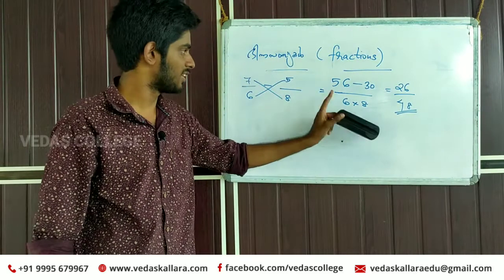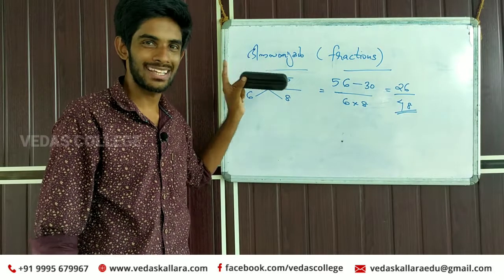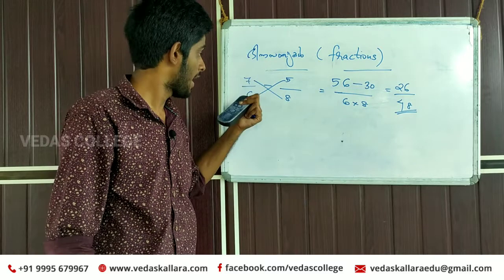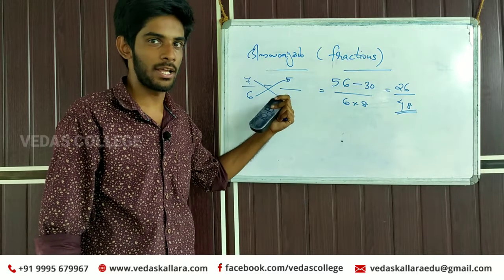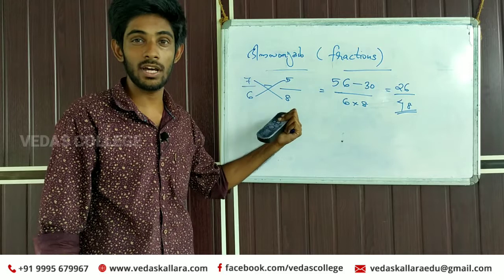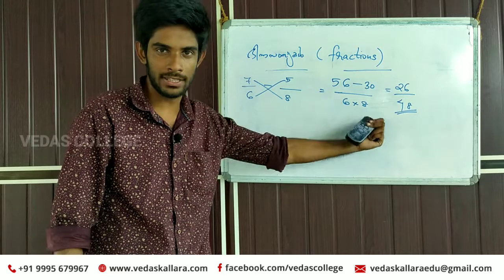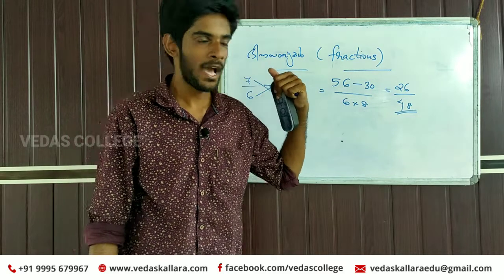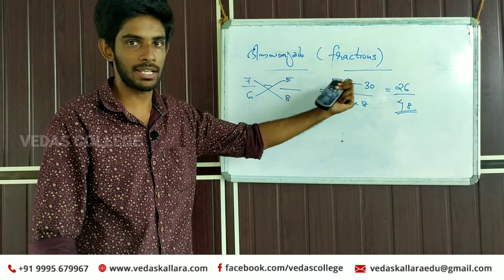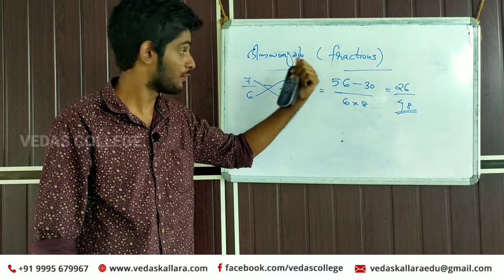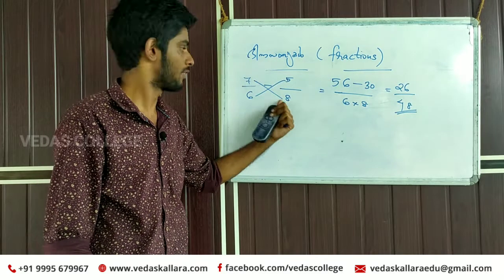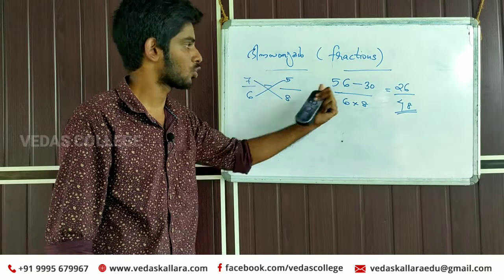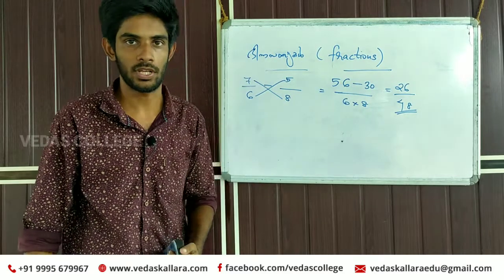If you have fractions with different denominators, you can use cross multiplication. When you write the denominator, then write the numerator. How many times the denominator is different — then we cross it. Okay, let's move on.